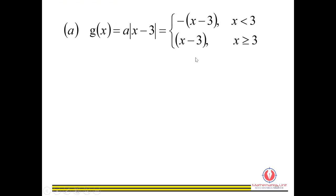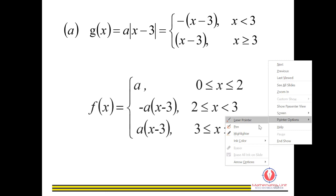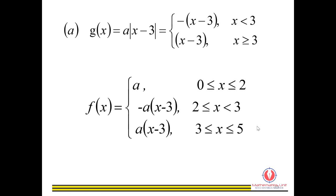First, we define the absolute value sign. We have a negative sign for x less than 3, and a positive sign for x greater than or equal to 3. We separate based on intervals: 0 to 2, then 2 to 3, and lastly 3 to 5. For 0 to 2 we have the constant a, for 2 to 3 we have the negative function, and for 3 to 5 we have the positive function.